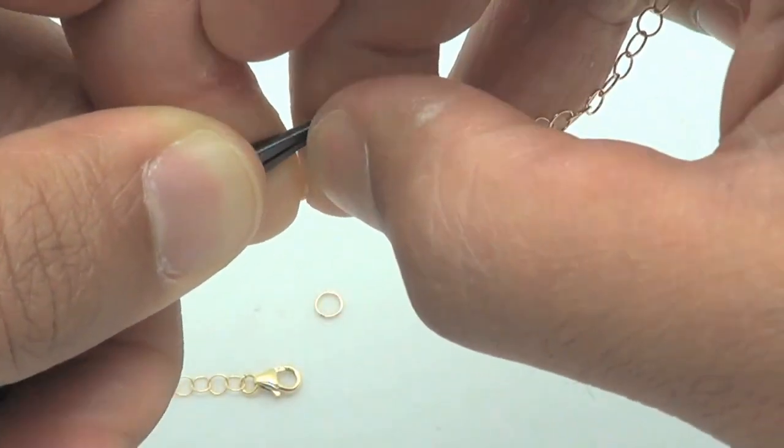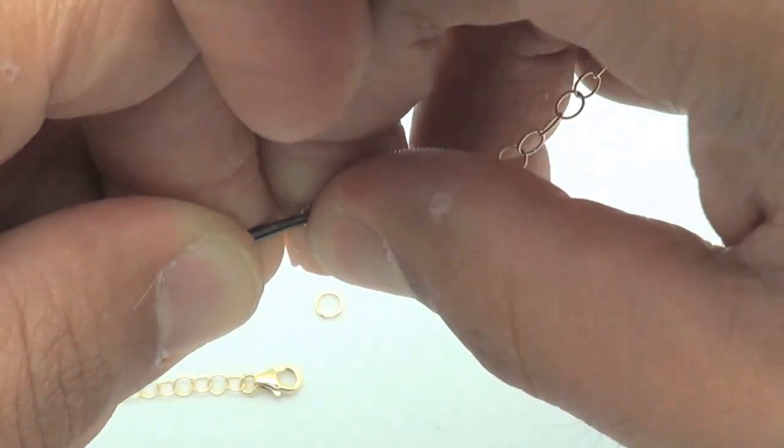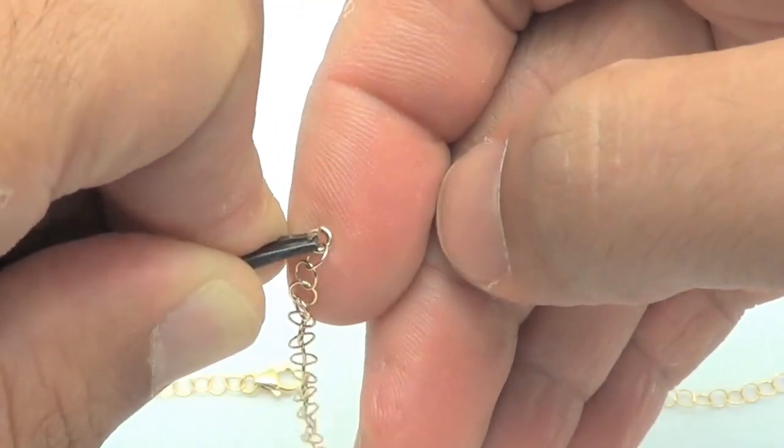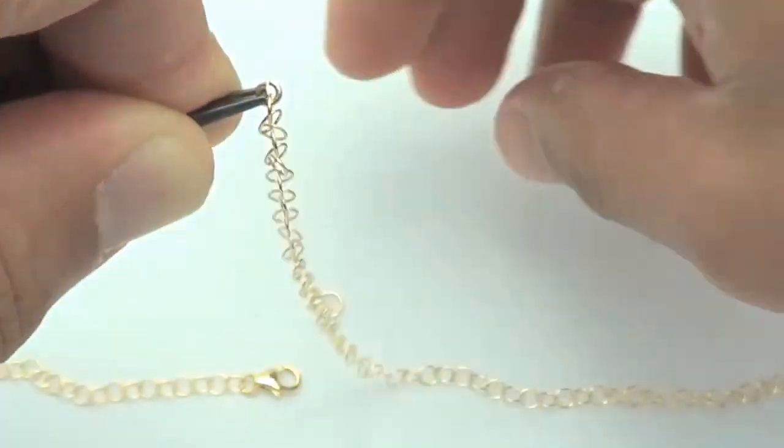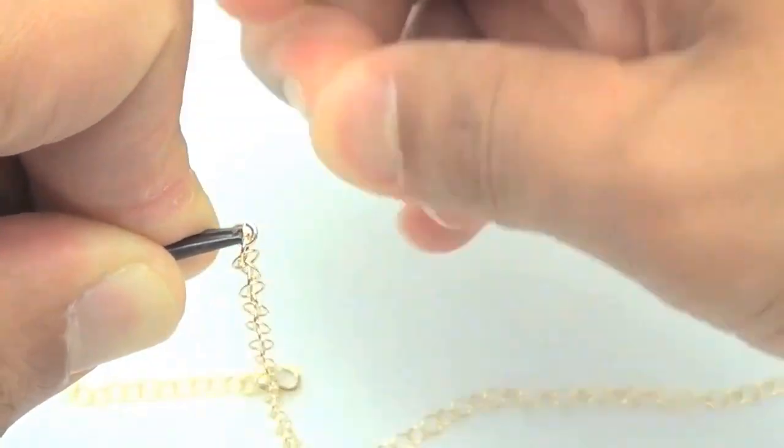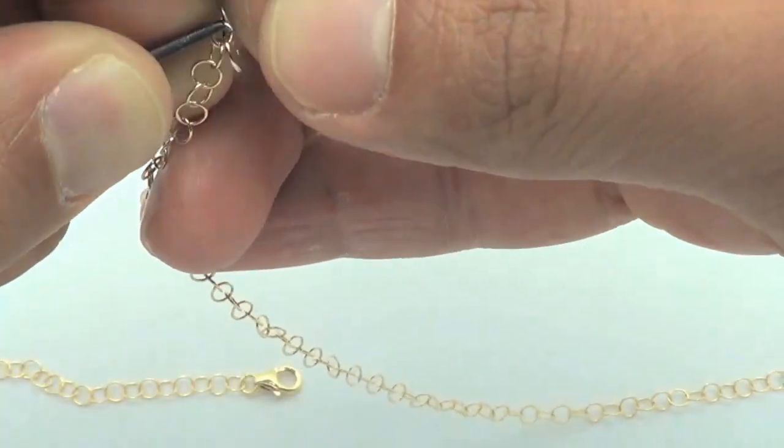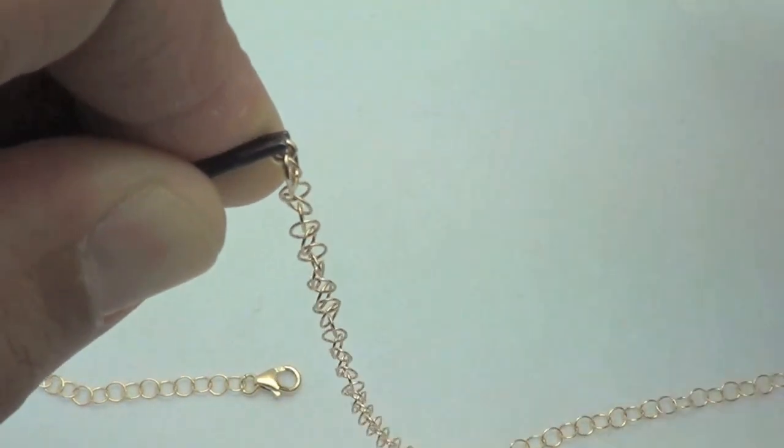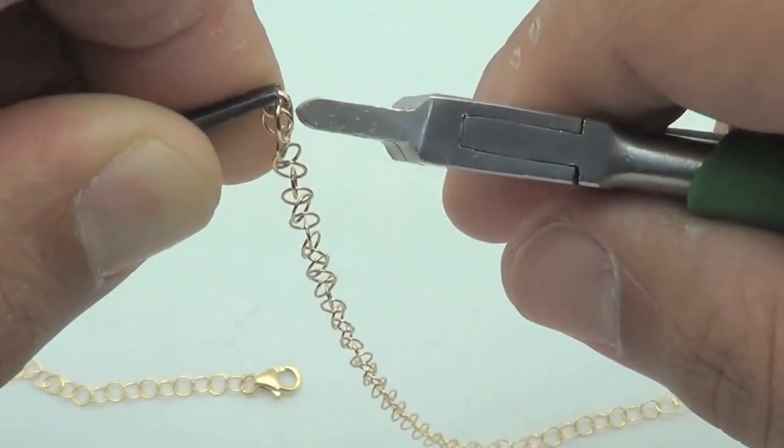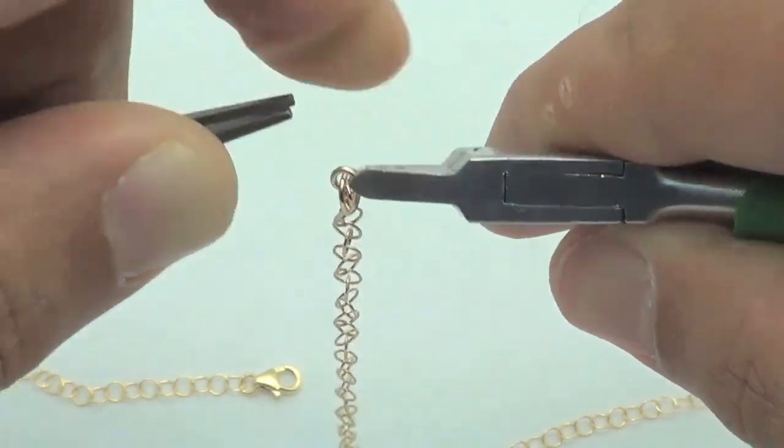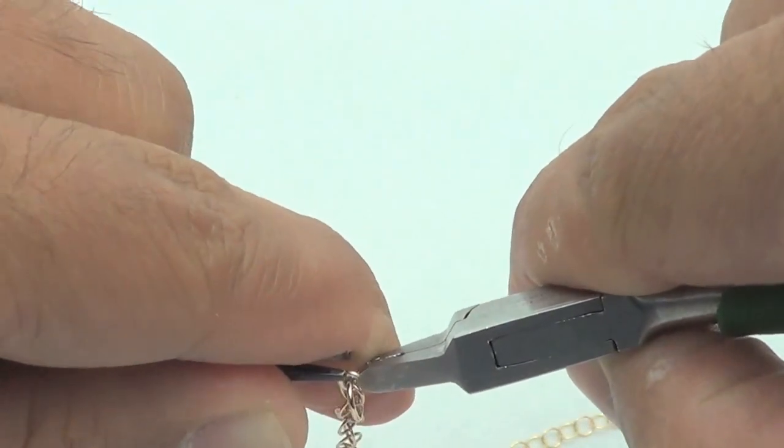Put the chain on, and then the large closed jump ring. I'm just going to get a better grip here. It's a lot easier if you have a good grip to start.